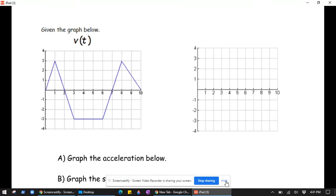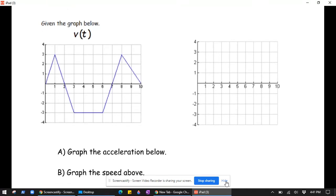So it says graph the acceleration below rather than to the right. I wanted to put speed to the right, so that's why I'm just going to label that for us to remember.